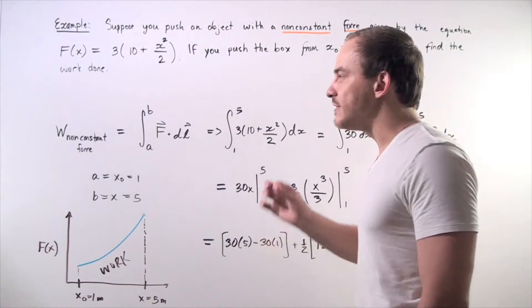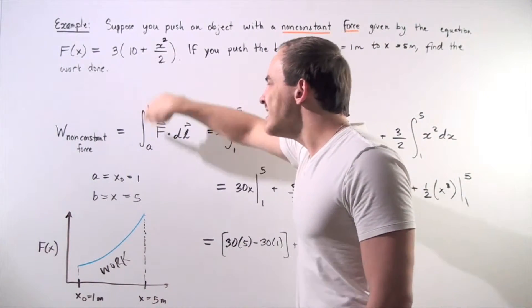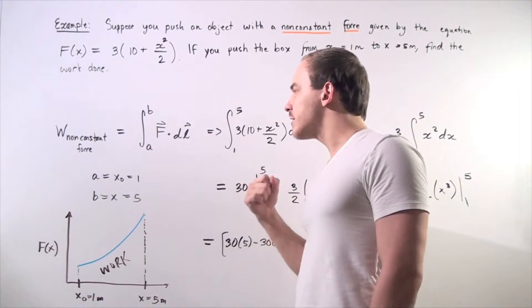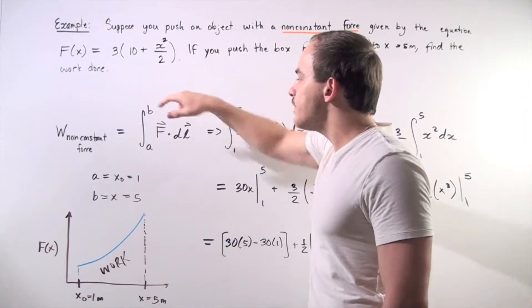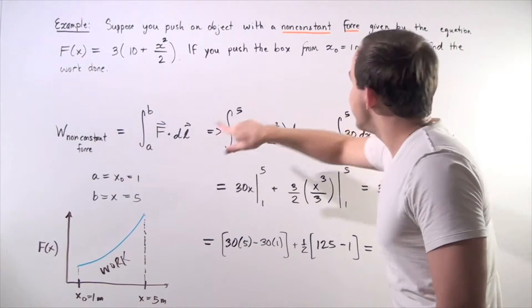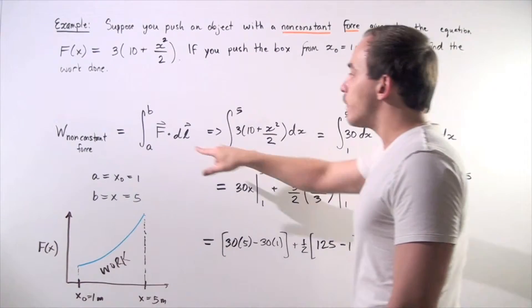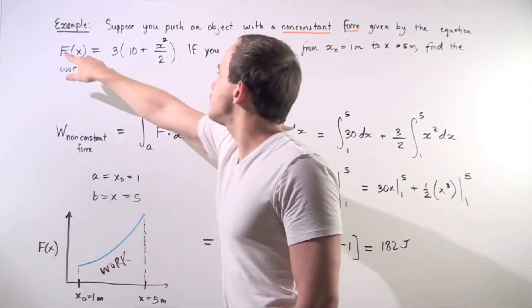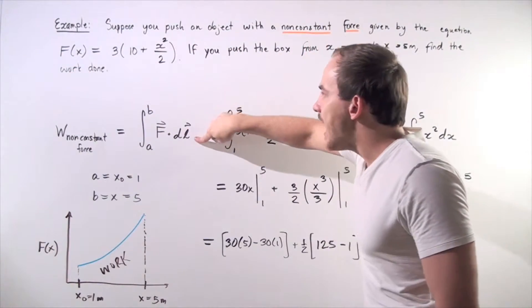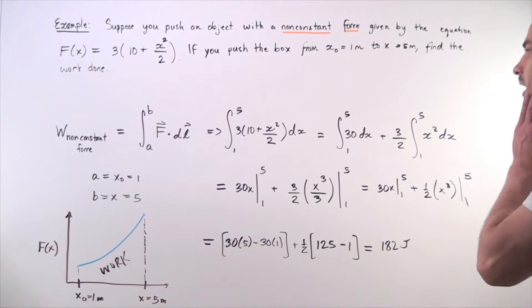The non-constant force formula for work is equal to, we integrate our dot product from our initial A to final B. So, in our case, our A is x-naught of 1 meter and B is our 5 meter mark. And our force function can be replaced with this function and the L can be replaced with x. And we get the following result.